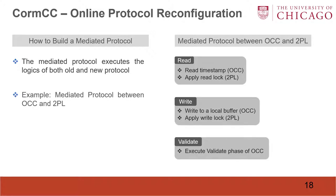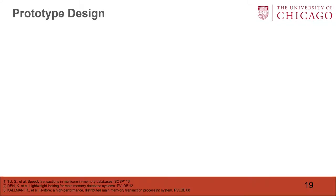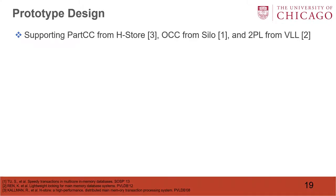For example, the mediated protocol between OCC and 2PL needs to execute the logic of both. If you want to read a record, it needs to read the timestamp and apply a read lock. If you want to write a record, you need to write to a local buffer for OCC and also apply a write lock. In the validation phase, it uses the validation phase of OCC to verify whether a transaction violates serializability. We design a prototype that supports PartCC from H-Store, OCC from CIDO, and 2PL from VLL.